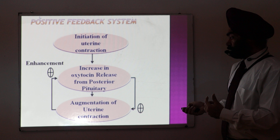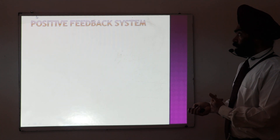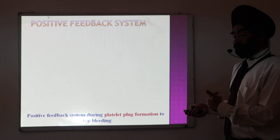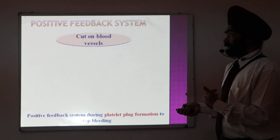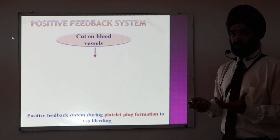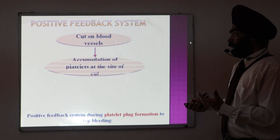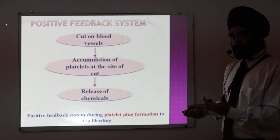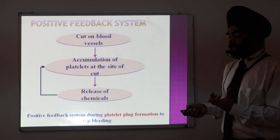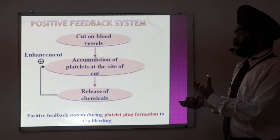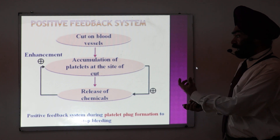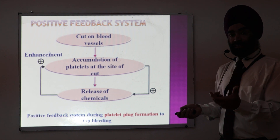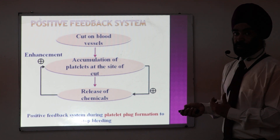Another example of positive feedback is the stoppage of bleeding — platelet plug formation. When there is a cut in a blood vessel, platelets accumulate at the site of the cut. Platelets release certain chemicals; these chemicals recruit more platelets. More platelets release more chemicals, which recruit even more platelets. This positive feedback mechanism continues until enough platelets fill the gap and reduce the bleeding.